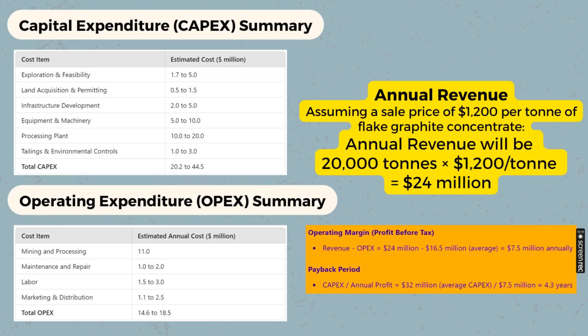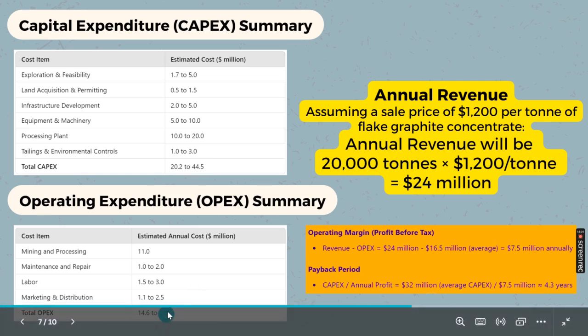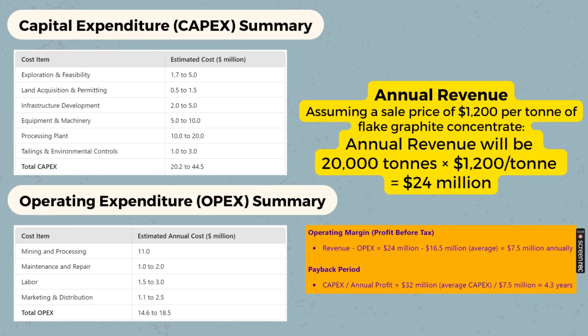Now let's look at annual revenue and compare it to costs. Assuming a sale price of 1,200 US dollars per ton of flake graphite concentrate and 20,000 tons of annual production, revenue becomes 24 million dollars per year. Meanwhile, the total initial investment is approximately 45 million dollars, with operational expenditure up to 18.5 million. Even if we consider all expenditure together at one time, total expenditure is approximately 45 plus 20 million, equaling about 65 million dollars.